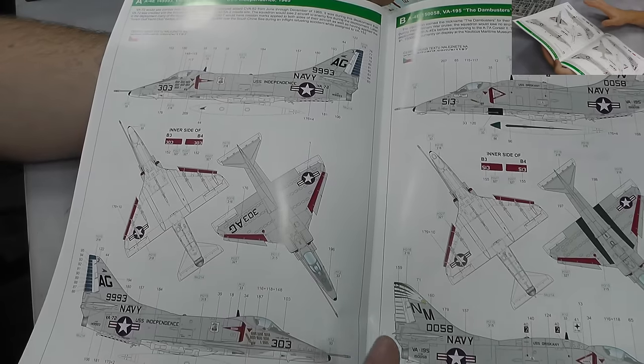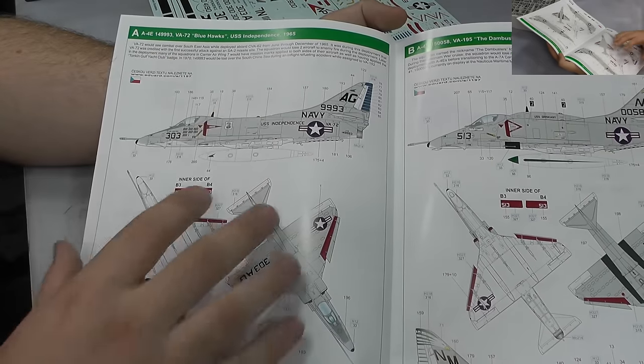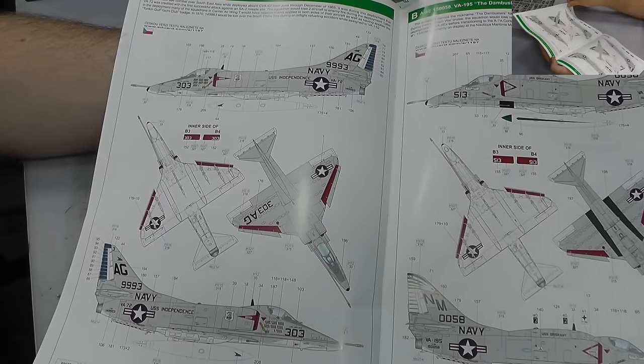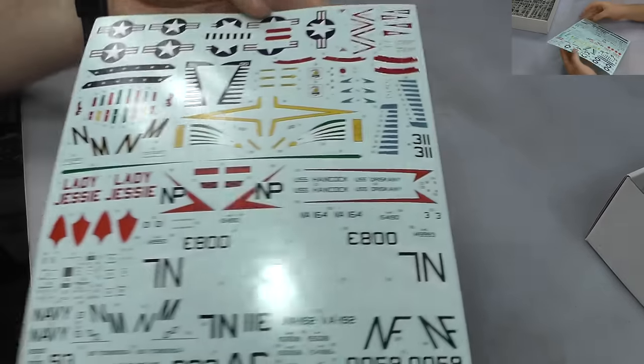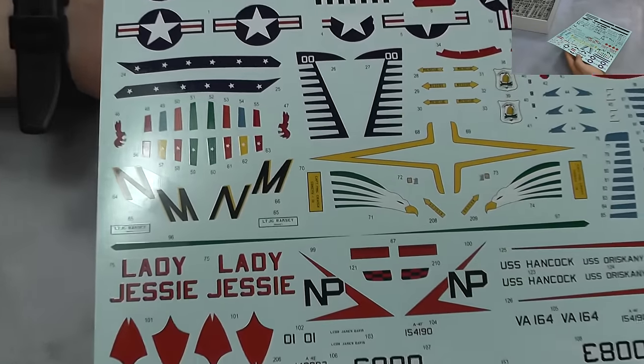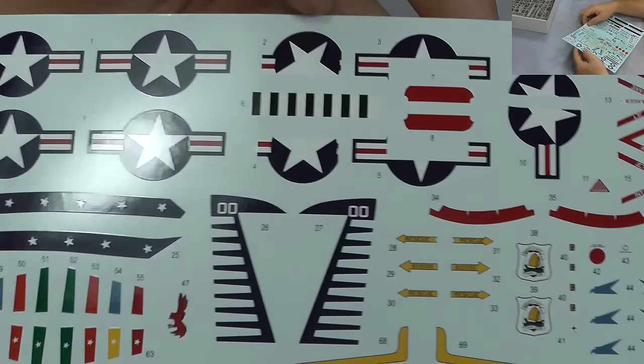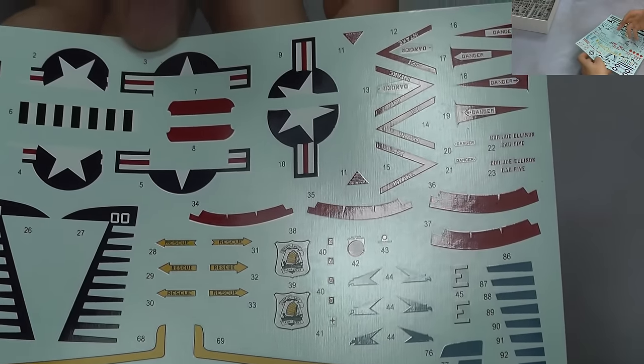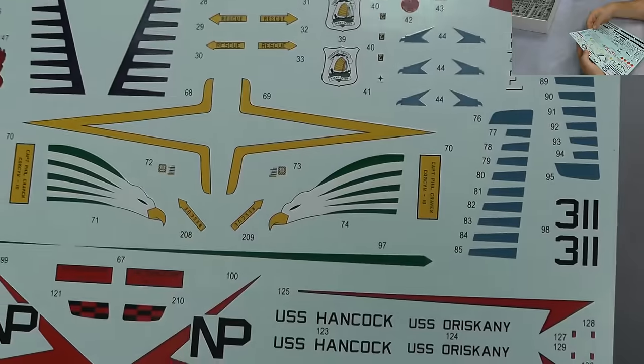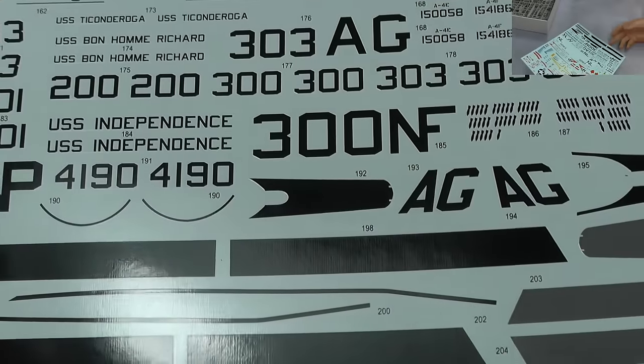And then we've got this fantastic set of markings - really good, nice write up about those individual aircrafts and their markings and there are an absolute load we can do there. So fantastic instructions there, which then brings us to our decals. They are printed by Cartograf, so we know they're one of the best in the world, going to have no problems. Microsol and set are going to work lovely with these. As you can see, very nice colorful, everything's in registry. You can read the small writing and everything.